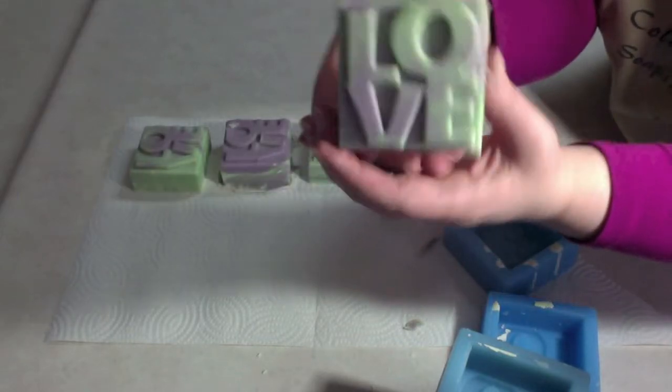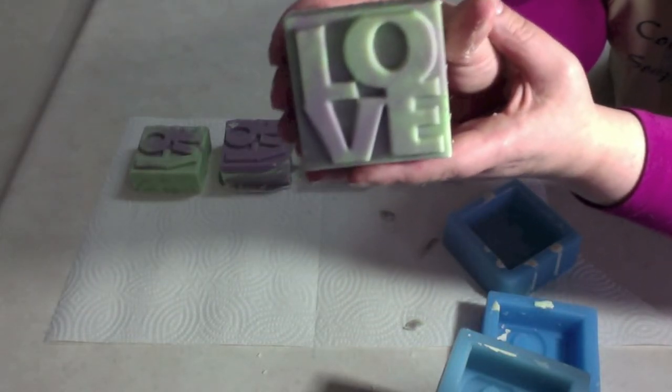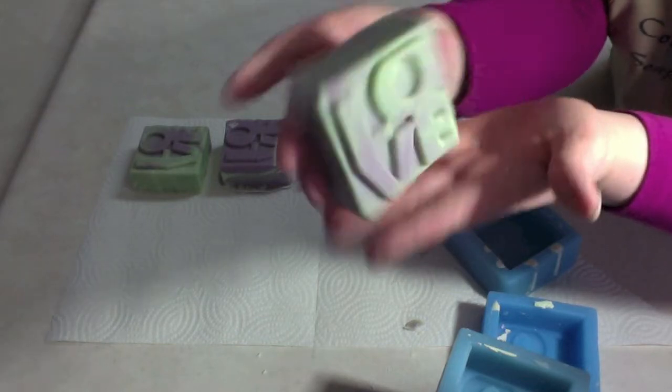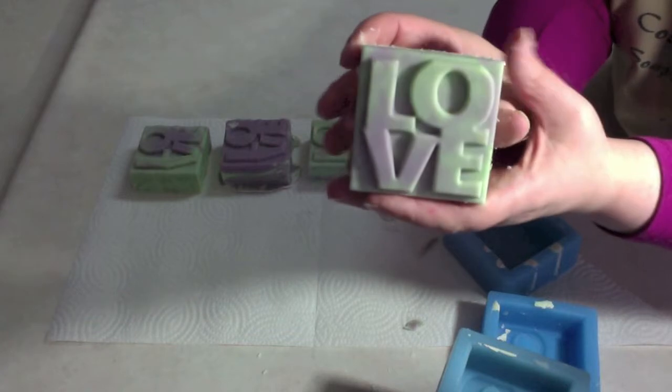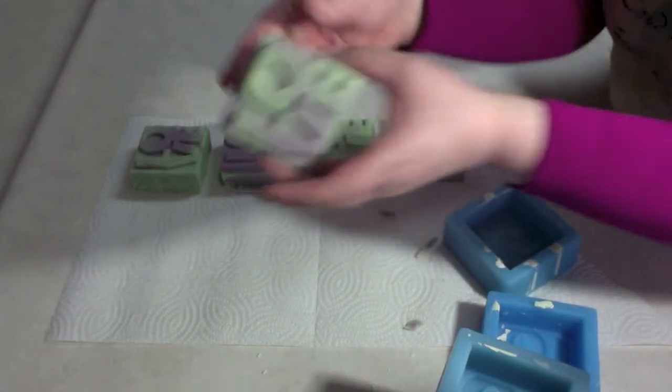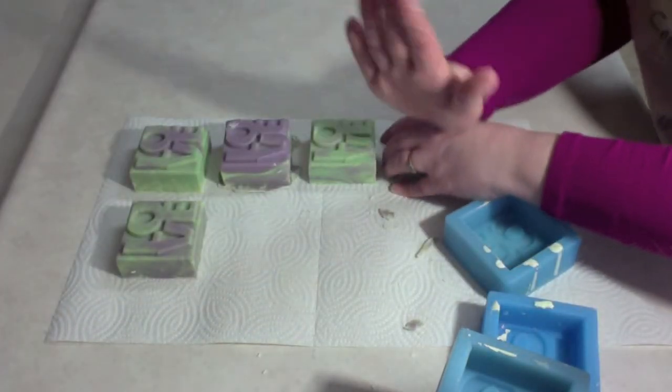That's all we have today is the Tea Berry Mint in the Love Mold. I wanted to see how the fragrance works. It's my first time ever using it. And the colors, the green and the purple, came out pretty. I hope that you enjoyed watching this, and I'll see you in the next video. Bye, everybody.